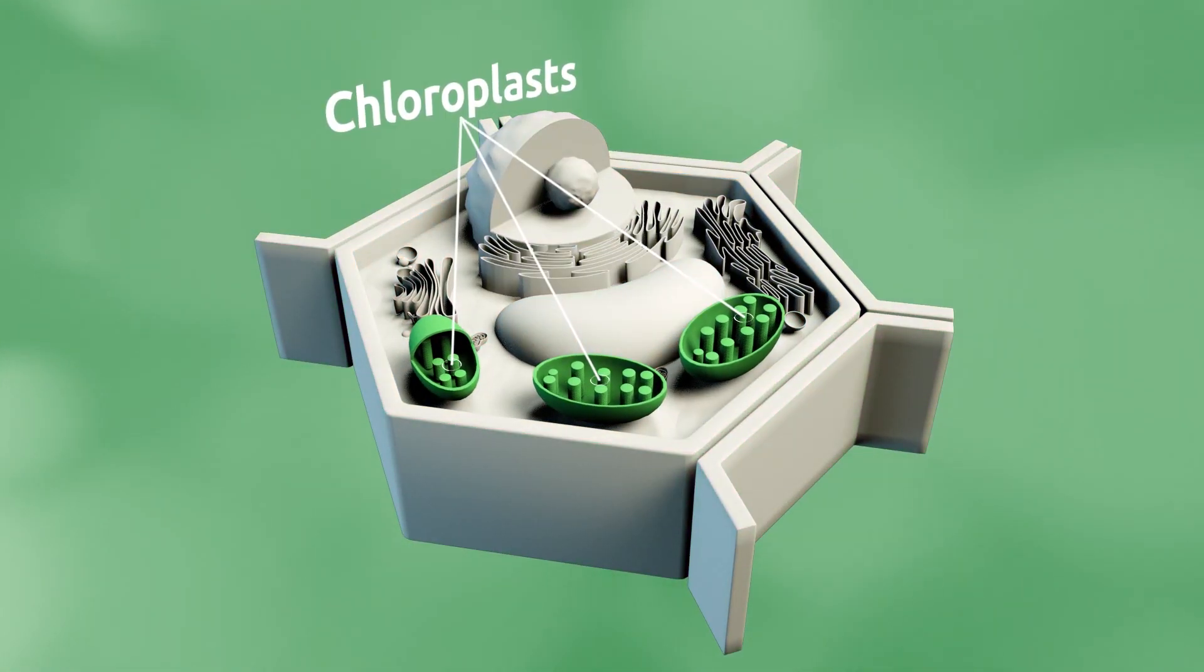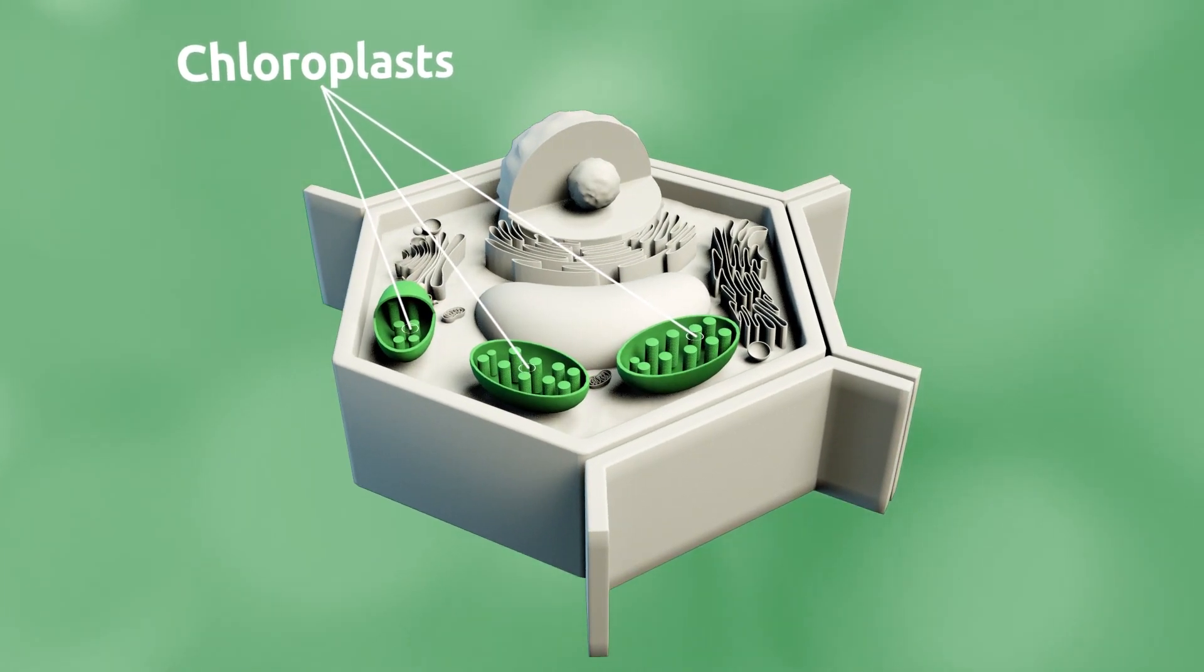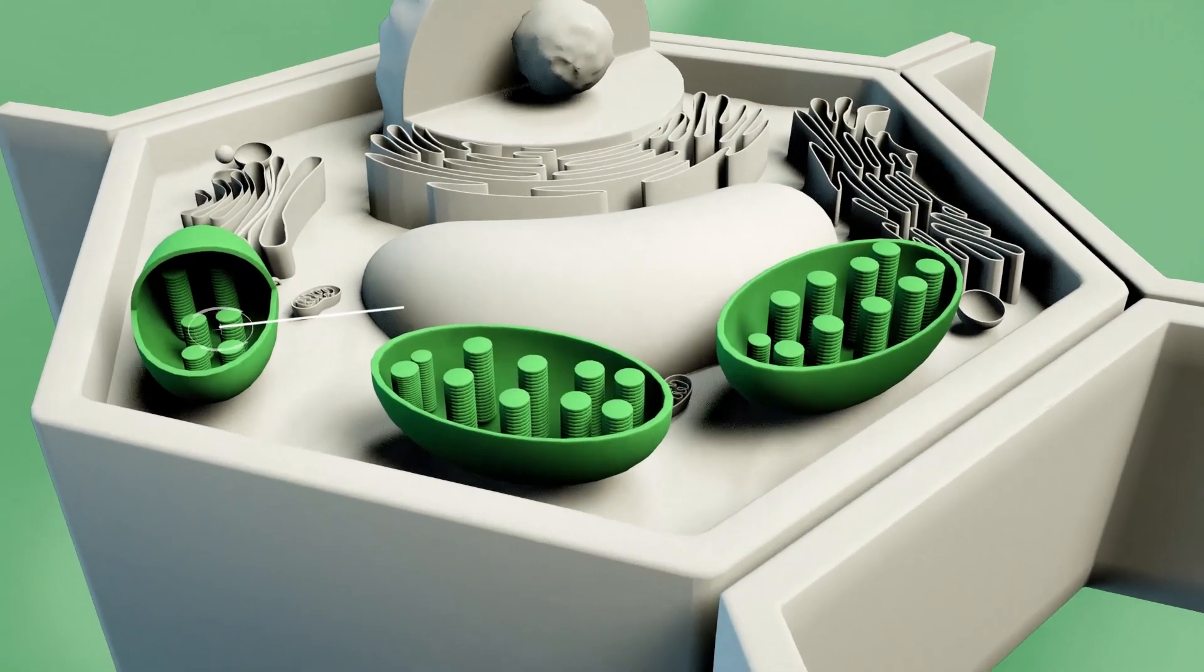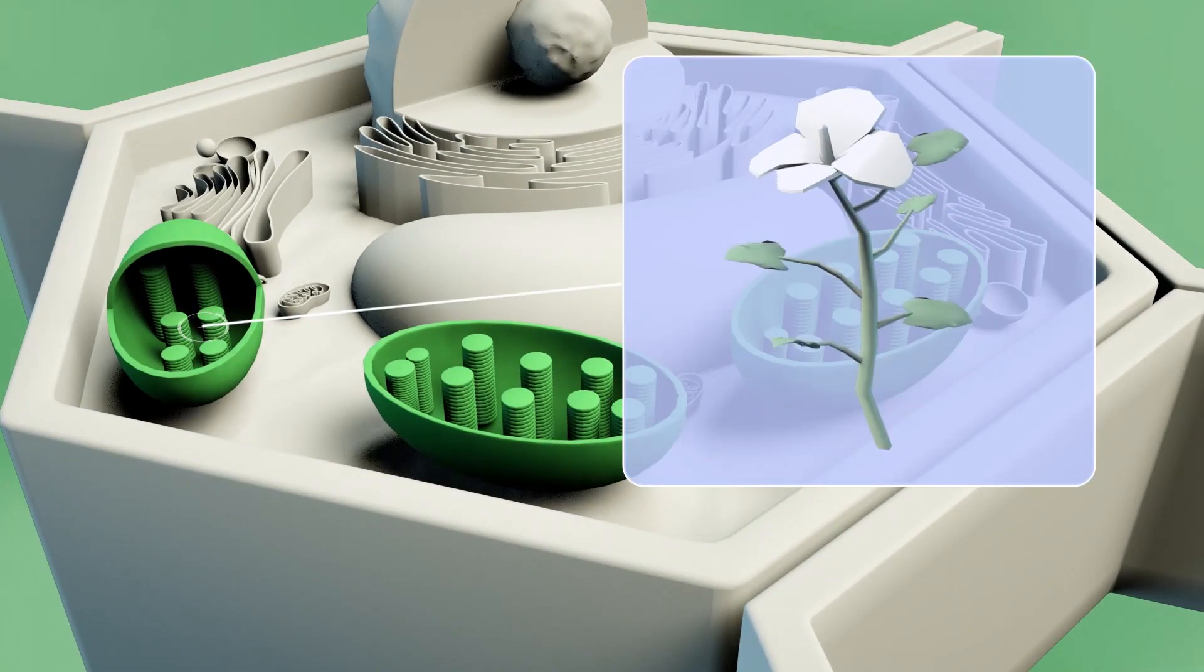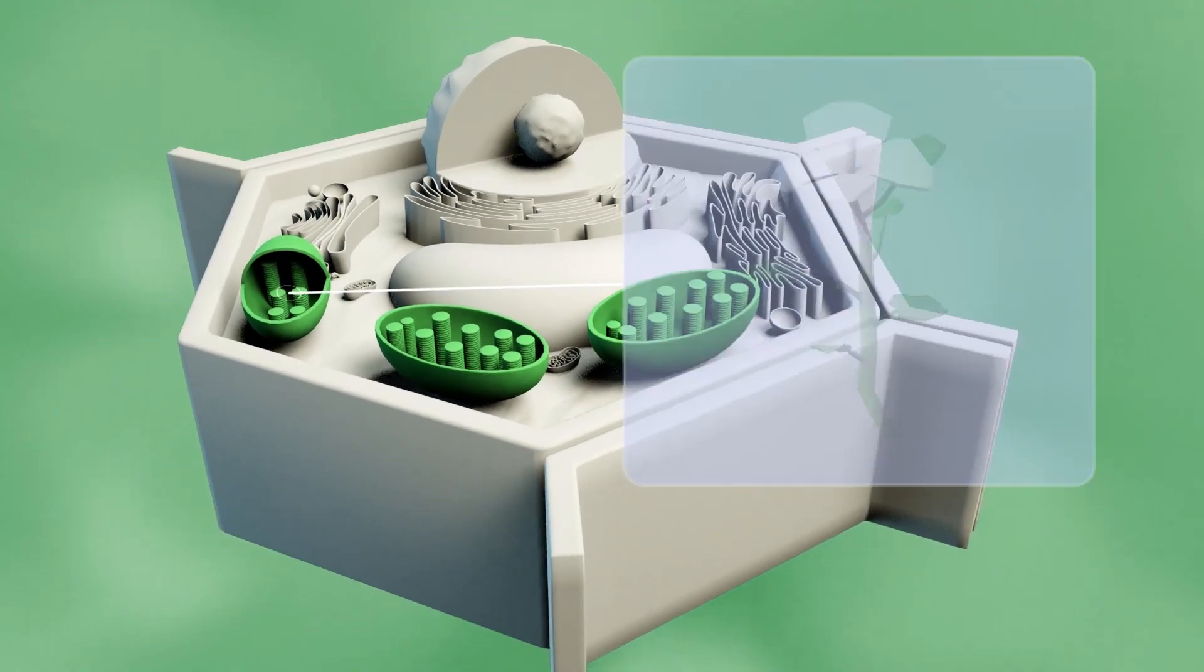Chloroplasts are the organelles which produce and store chemical components essential to the cell. For example, chlorophyll, which gives plants their green color, is stored in the chloroplasts. Chlorophyll also plays an important role in photosynthesis.